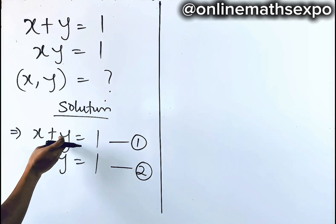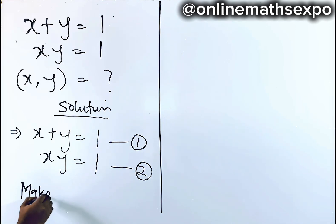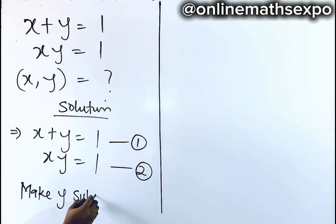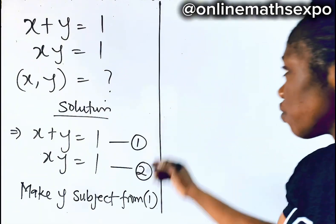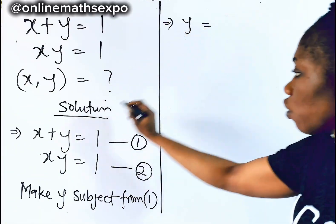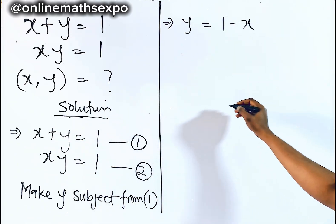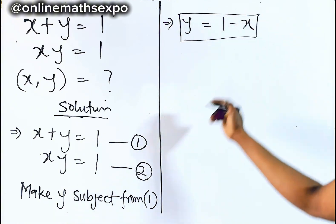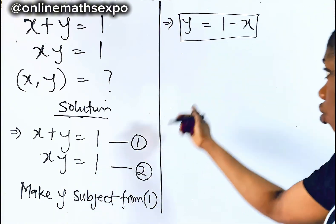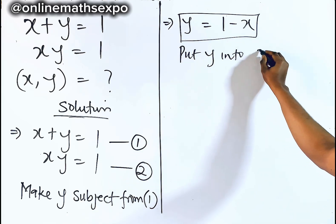I'm going to make y the subject from equation 1. So if you do that, y is equal to 1 minus x. This value of y we are going to substitute into equation 2.